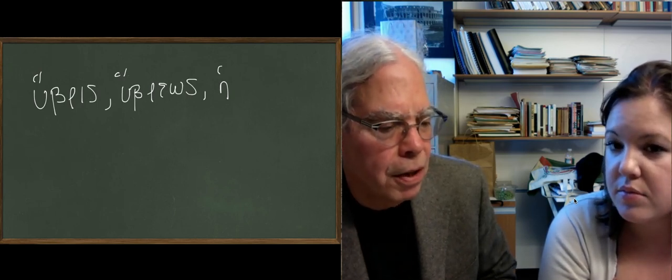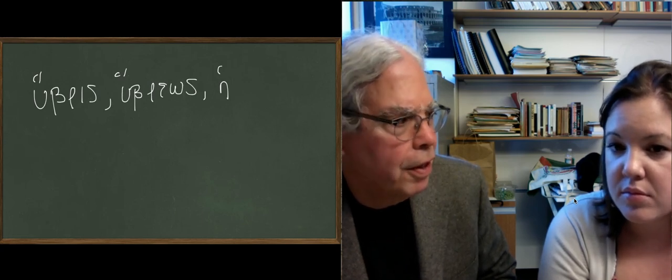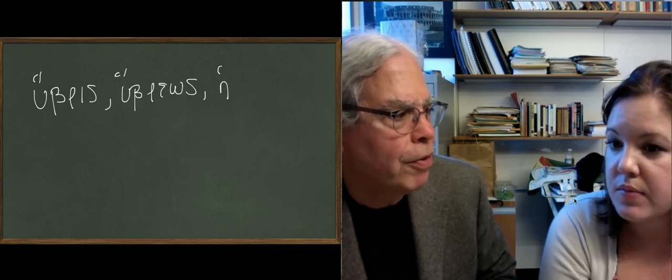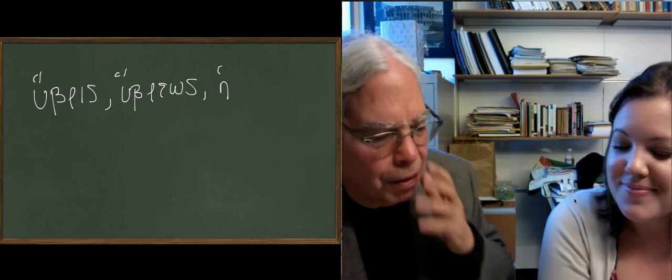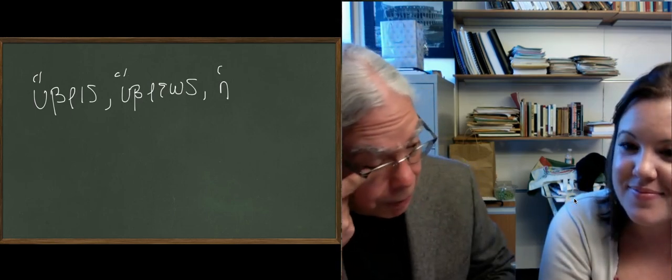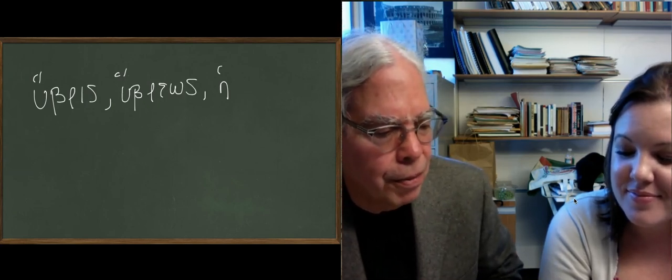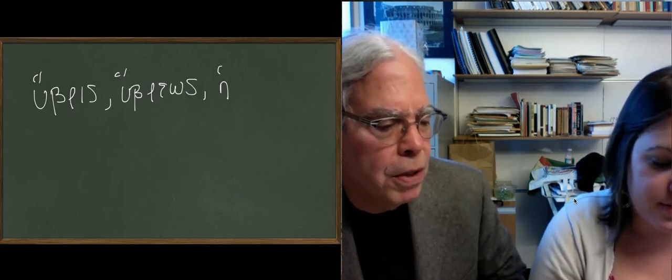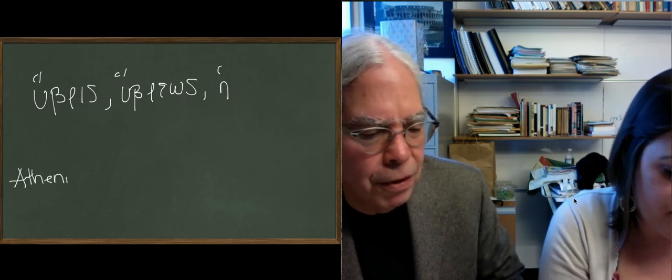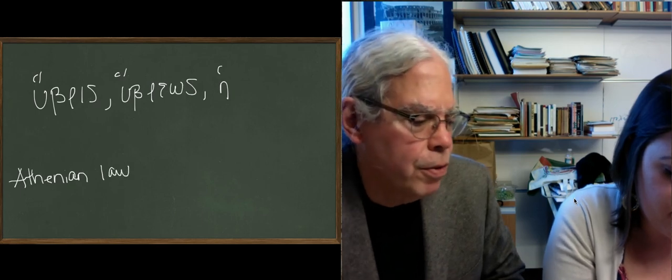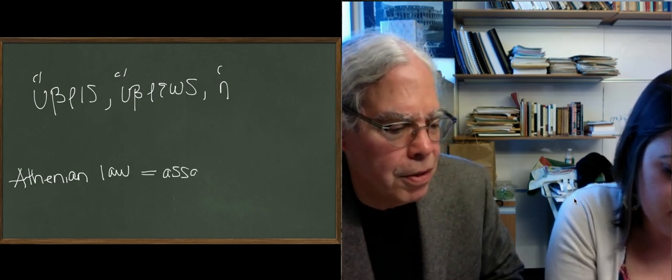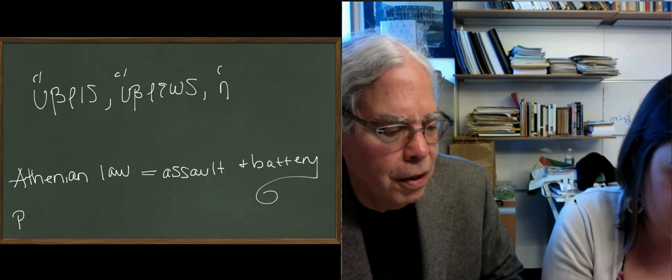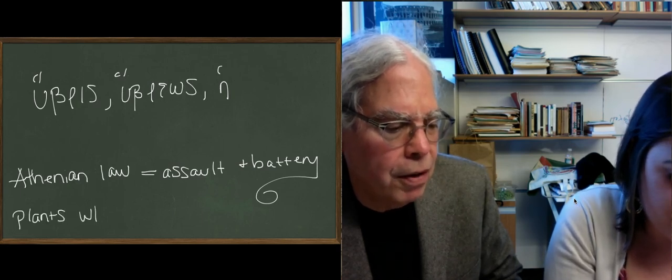In Athenian law, hubris means assault and battery. So when you beat up your fellow citizen in Athens, that's hubris. You've gone nuts, and you do harm to your own citizens from the Athenian point of view. So you can see how this notion can get into something like arrogance, but that's not the underlying idea.